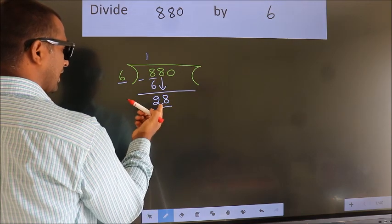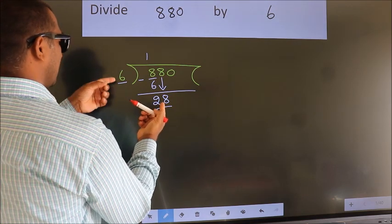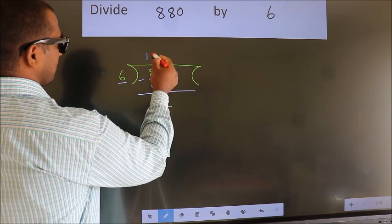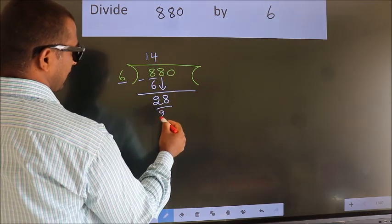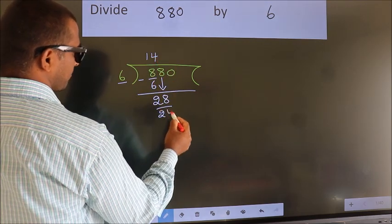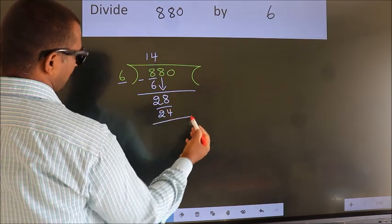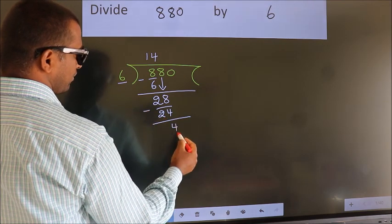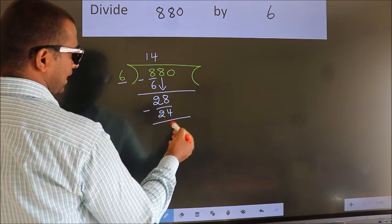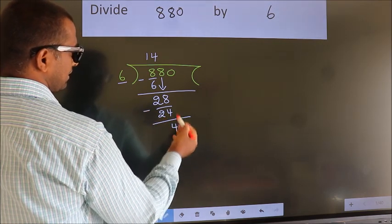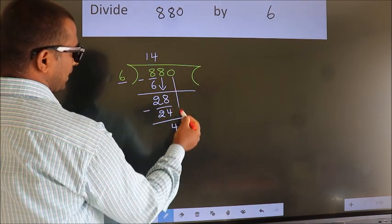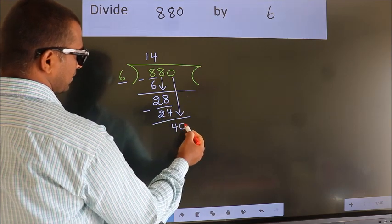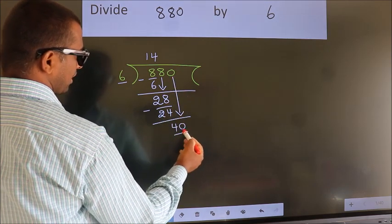A number close to 28 in the 6 times table is 6 × 4 = 24. Now we subtract. We get 4. After this, bring down the beside number. So, 0 down. So, 40.